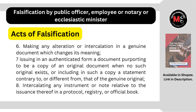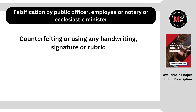Now, i-discuss natin isa-isa. First act of falsification: counterfeiting or using any handwriting, signature, or rubric. Dito, kukopyahin mo yung original handwriting, signature, or rubric. Rubric pala is a special signature. Included din dito yung paggawa ng signature na hindi nag-i-exist. For example, ang nakalagay na pipirma doon sa document is si Juan de la Cruz. Hindi ikaw si Juan de la Cruz, so gagayahin mo yung pirma niya. What if hindi pala marunong magsulat si Juan de la Cruz? Ang gagawin ngayon ng accused, gagawa siya ng pirma ni Juan de la Cruz. Sa pangalawa, wala siyang ginaya, pero gumawa siya ng signature na hindi naman nag-i-exist, kasi nga hindi marunong magsulat si Juan de la Cruz.